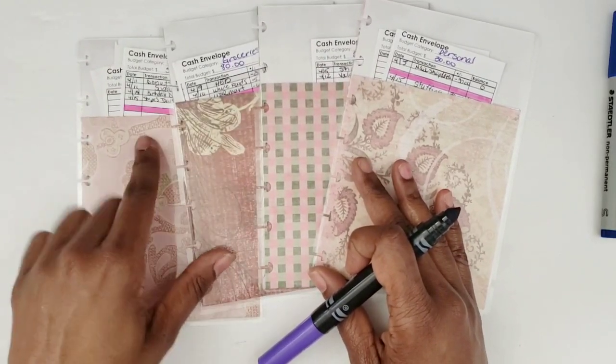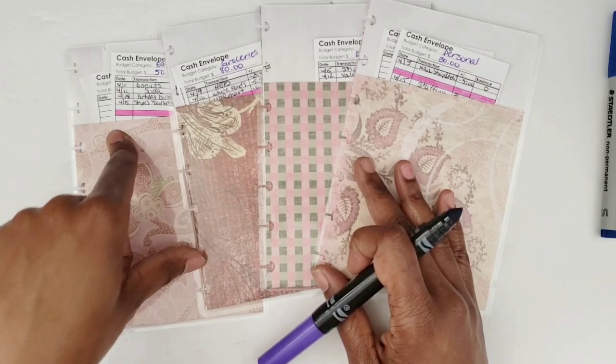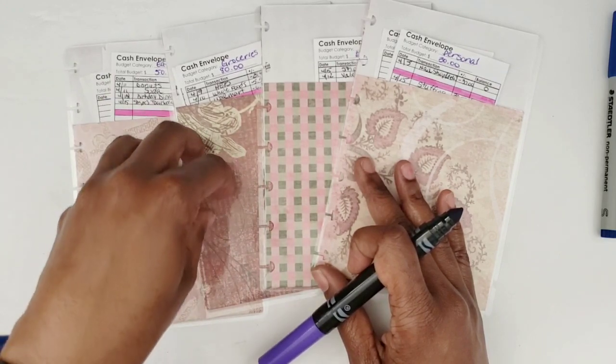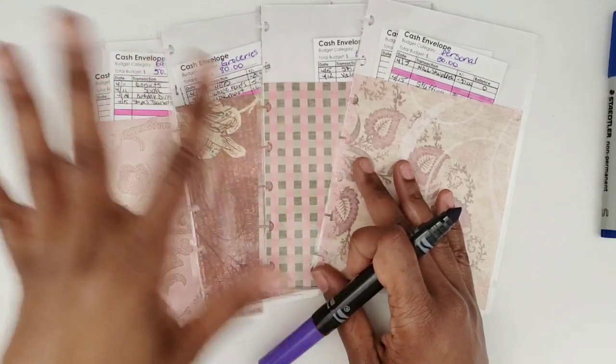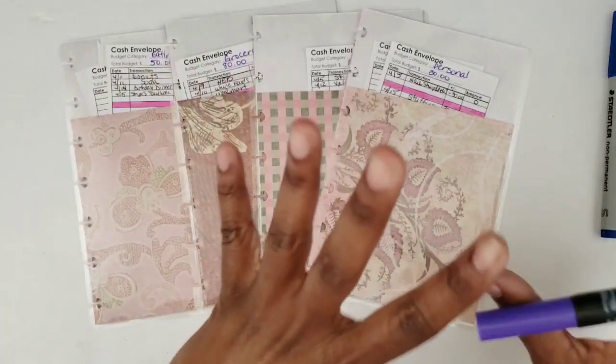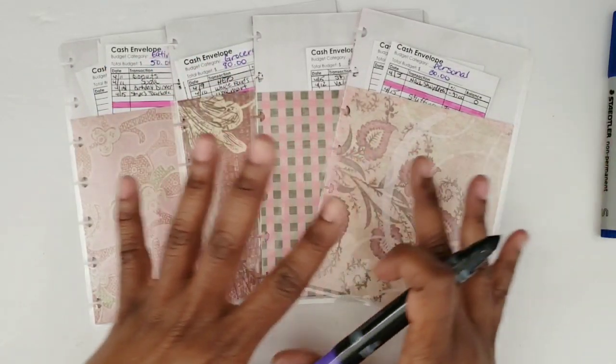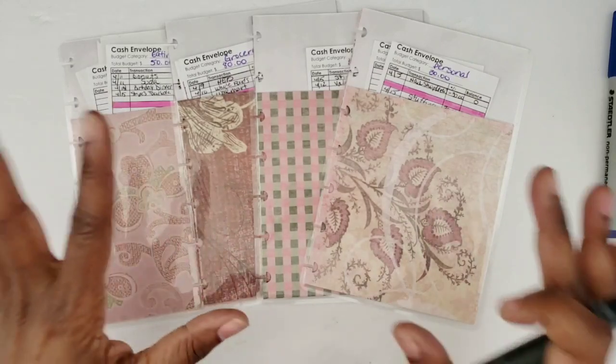Eleven dollars left in groceries and I had seven dollars left in eating out and I used that amount last week to kind of get me by because I didn't want to pull from funds that I already have in the bank. I didn't want to really touch that but I did have to touch it a little bit.